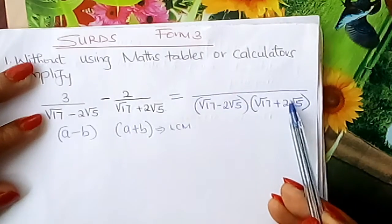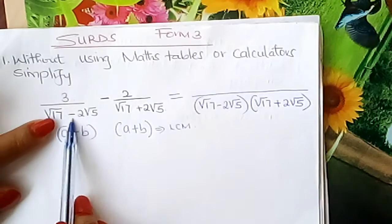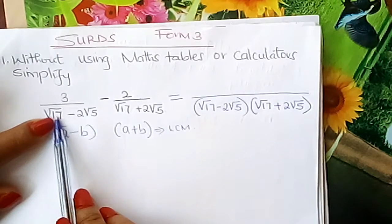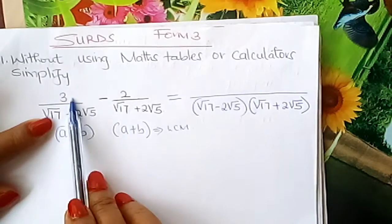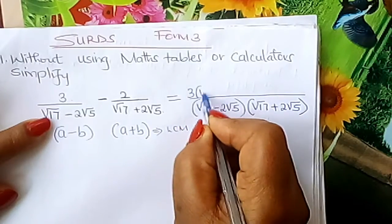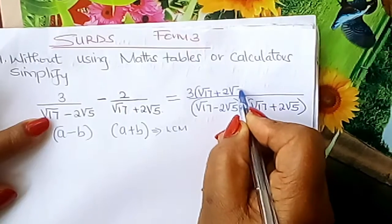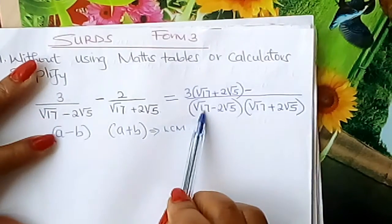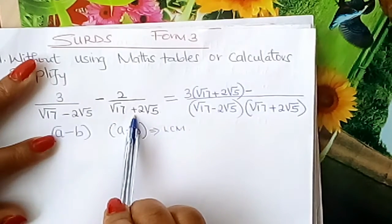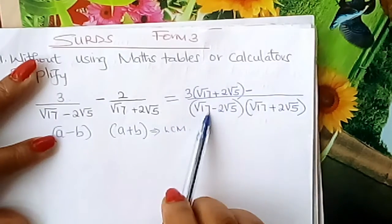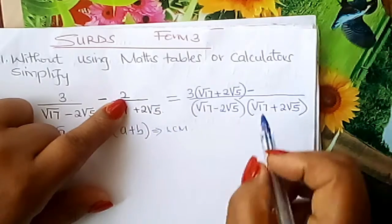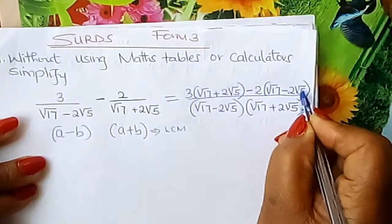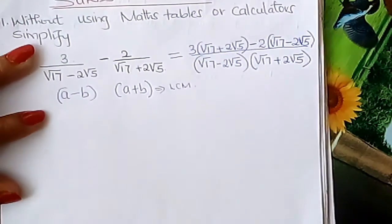The LCM divided by the first denominator (root 17 minus 2 root 5) leaves you with root 17 plus 2 root 5. You multiply that by 3, giving 3 times (root 17 plus 2 root 5). Then subtract: the LCM divided by the second denominator (root 17 plus 2 root 5) leaves root 17 minus 2 root 5, and you multiply that by 2.